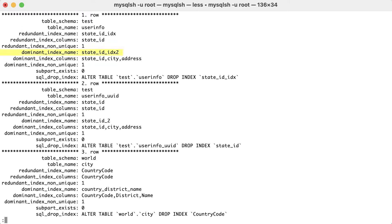Here, we see that index 2, which includes state id, city and address columns, is the dominant index, while the index 1, which includes only the state id column, is a redundant index.